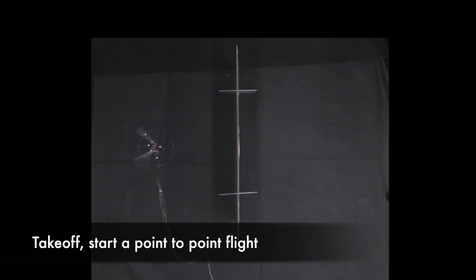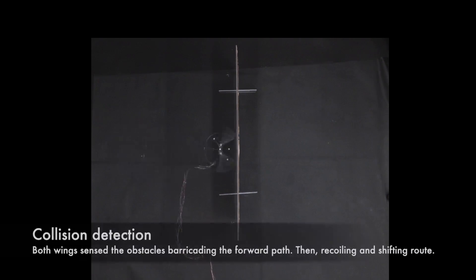The current feedback also allows the robot to detect when the wings collide with objects. This can be used for contact detection, allowing the robot to alter the flight trajectory and bypass obstacles.